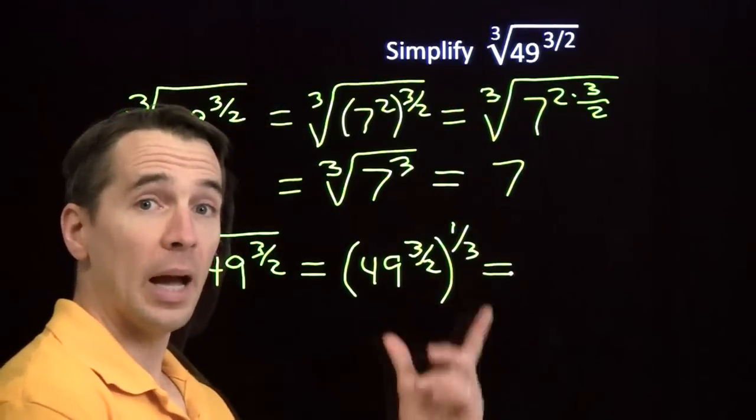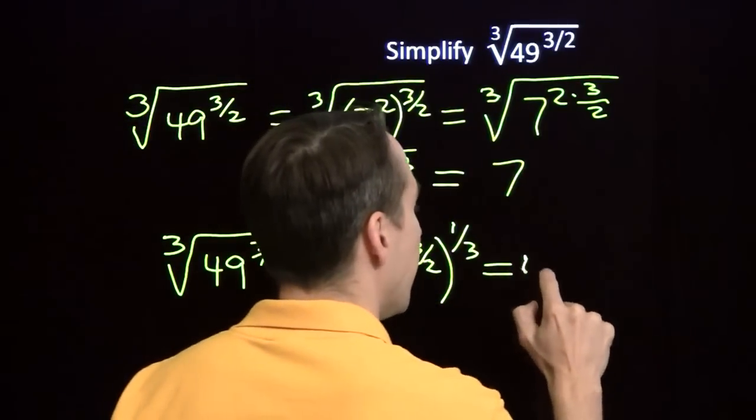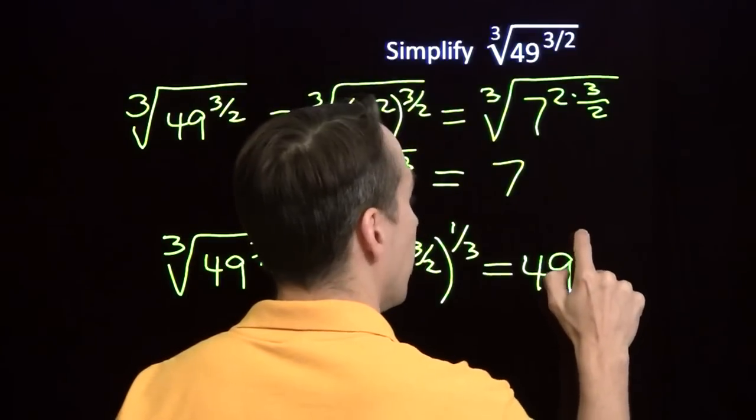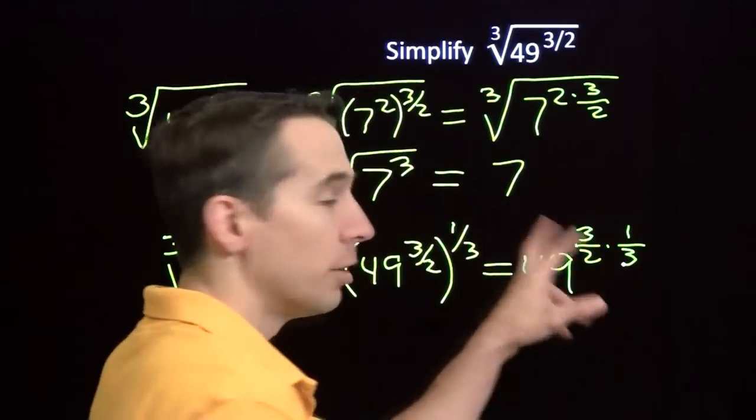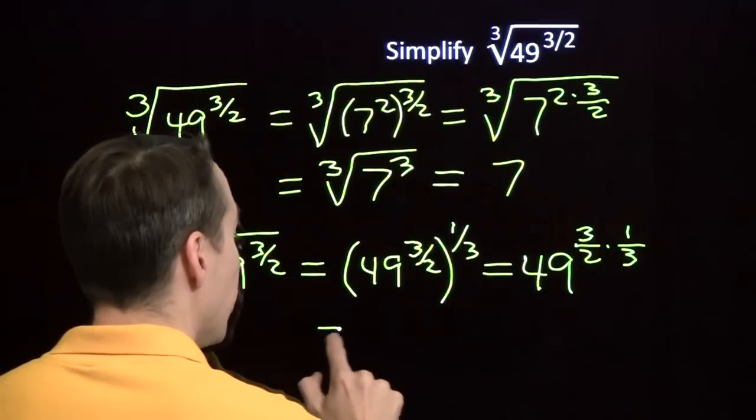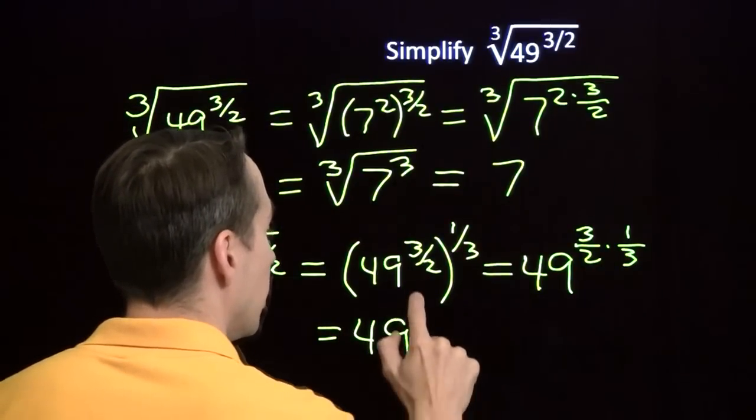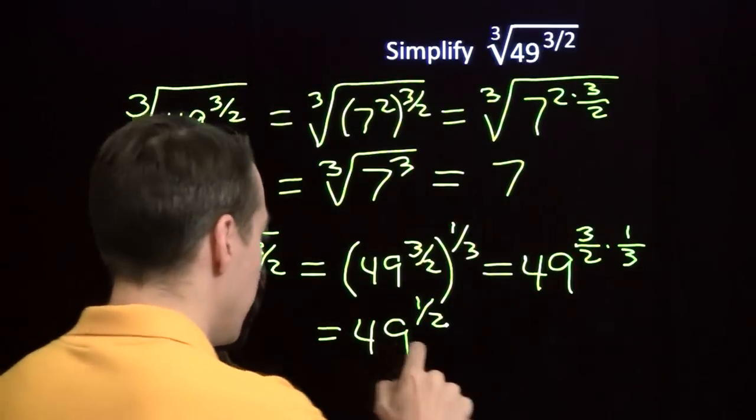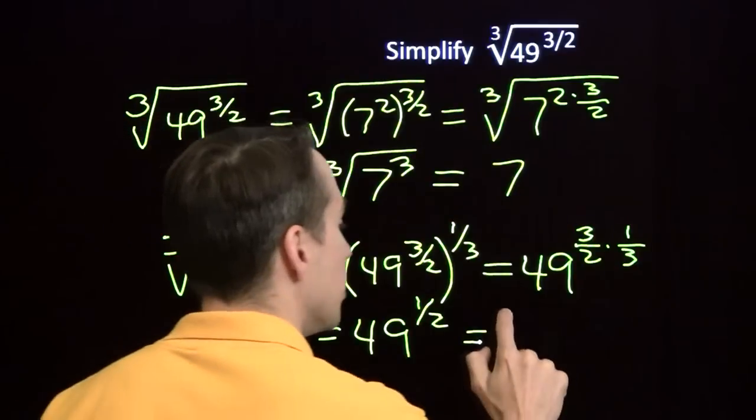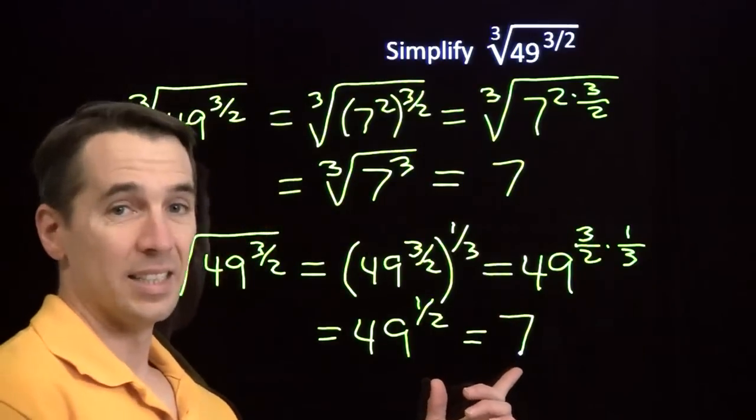Now once again, we have power of a power. We know what to do there. We multiply the exponents. So we have 49 to the 3 halves times 1 3rd. The 3's cancel off, and we're left with 49 to the 1 half power. And of course, you multiply 7 by 7 to get 49. This is just the square root of 49. So our answer is 7.